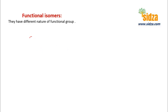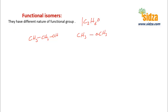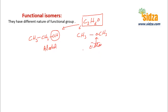Take the example of ethanol: CH3CH2OH, and another molecule CH3OCH3, which is dimethyl ether. Look at the two molecules — the formula is the same for both: C2H6O. But they have different functional groups. Here you have a hydroxyl group as the functional group, and there you have an ether linkage.